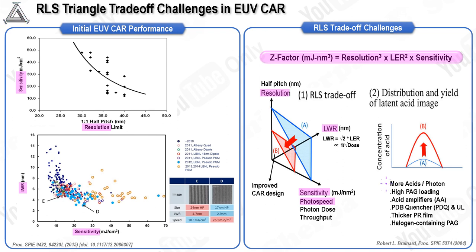Many ideas have been attempted to improve the RLS trade-off. Increasing film quantum yield for more acids from absorbed photons allows resists with simultaneously improved RLS. High PAG loading has been found to improve RLS trade-off; PAG loading in EUV CAR has been increased up to 50%, a stark contrast to less than 10% typically found in deep UV CAR. Acid amplifier molecules help lower the needed dose for acid generation by decomposing in the presence of catalytic acids to create more acid. Photo-destroyable base quencher, PDQ, alongside an underlayer plays a pivotal role in enhancing photoacid concentration. A thicker photoresist layer increases secondary electron generation, alleviating stochastic effects, though higher aspect ratios risk pattern collapse during development.